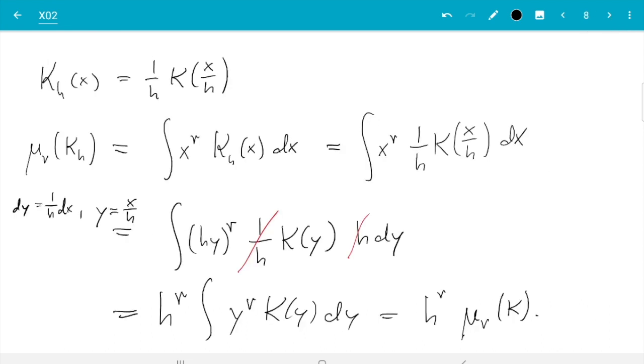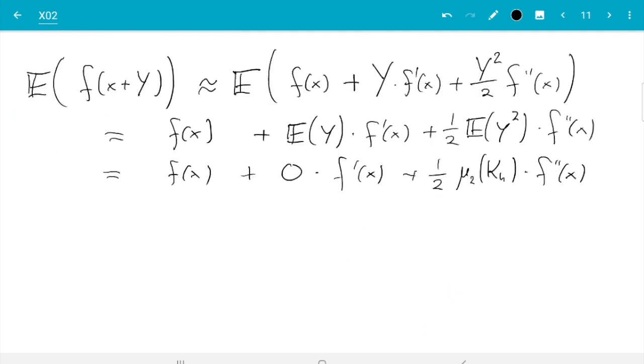And we have proved this result here about moments of rescaled kernels. So the second moment of k_h equals h squared times the second moment of k. So what we get is f(x). Next term is not there. And then we have one half h squared second moment of k f''(x).